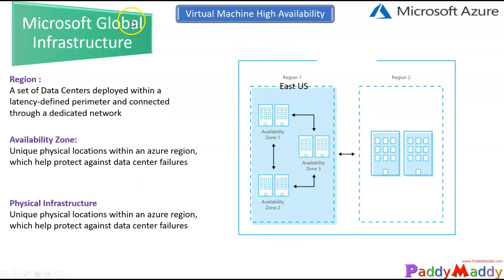The second point is Microsoft's global infrastructure. When it comes to global infrastructure, Microsoft offers a few things. First, Microsoft has regions. When we create a virtual machine or other Azure resources, we have to select a location — it could be Australia, Southeast Asia, or Singapore. Microsoft uses the terminology 'region' with names like East US, West US, or South Asia.